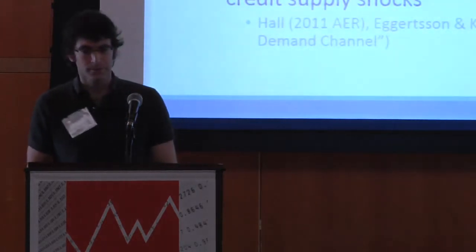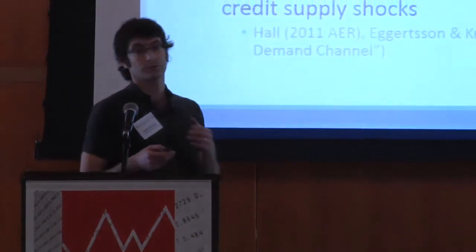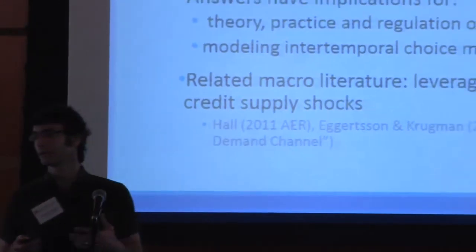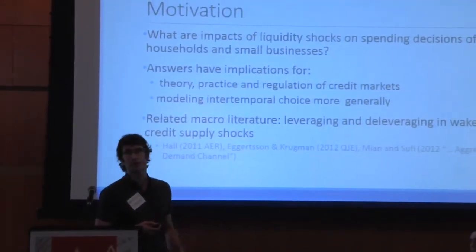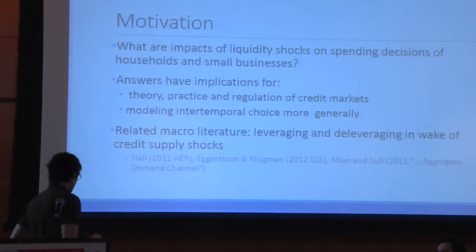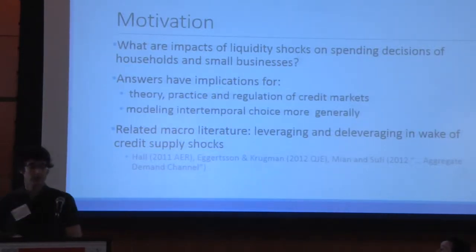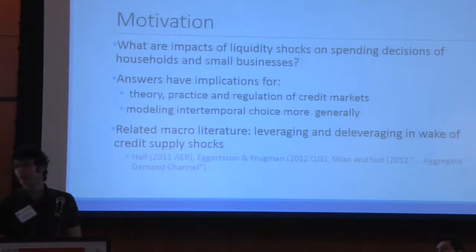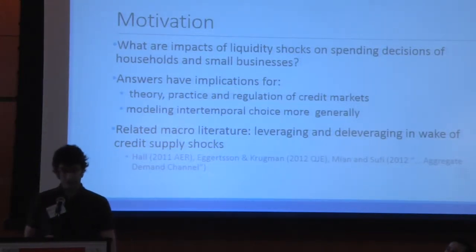So substantively, this is a paper about tracing the impacts of liquidity shocks on the spending decisions of households and small businesses. In this setting, those two types of agents are one and the same — we're talking about households that operate small businesses in a very closely held way. Being able to trace spending responses to liquidity shocks has implications for the theory, practice, and regulation of credit markets, and for modeling intertemporal choice more generally.